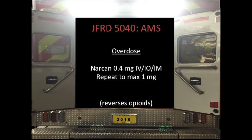For overdose, the one you can really treat is narcotics — oxycodone, hydrocodone, morphine, Dilaudid — you can give Narcan or naloxone at 0.4 milligrams IV, IO, or IM, repeating to a max of one milligram. This reverses opioids, but it's important to remember it does not reverse other substances. The person may still have benzodiazepines on board — if they take a lot of Klonopin or Xanax, Narcan won't reverse that. They may have multiple medicines in their system and you may not see a full response.